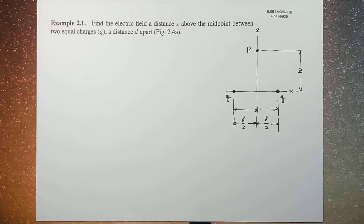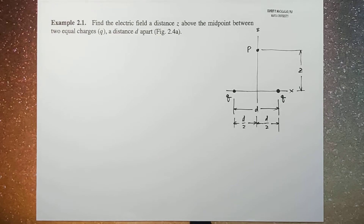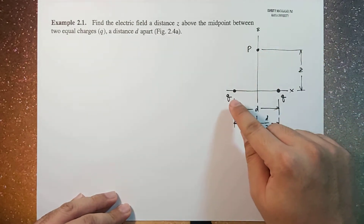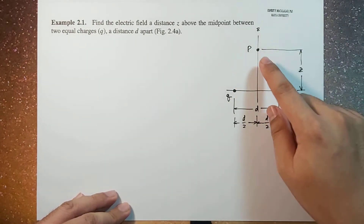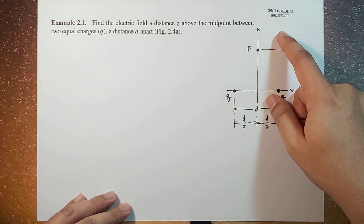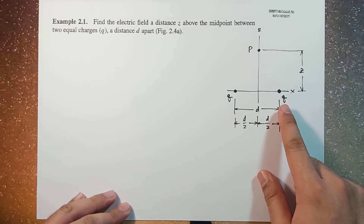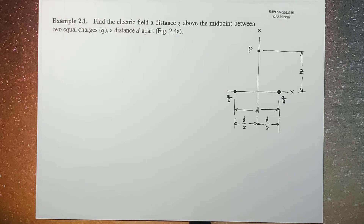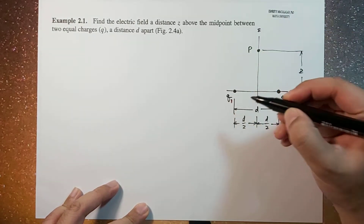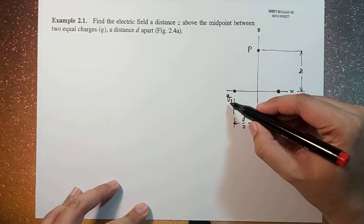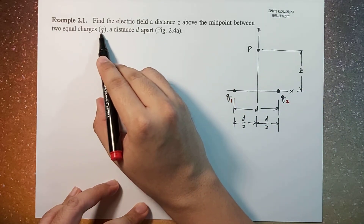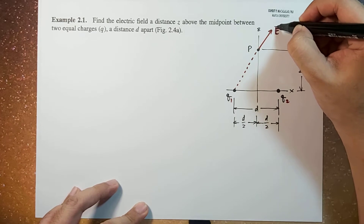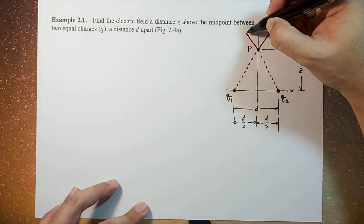This is a combination problem — we're going to use the principle of superposition, wherein the electric field produced by the left charge at point P can be added vectorially to the electric field produced by the right charge at the same point. Because the two charges are positive, let's call this q1 and this q2. The charge q1 with magnitude q will have an electric field directed in this direction — let's call this E1 — and similarly E2 here.